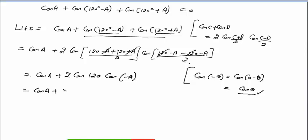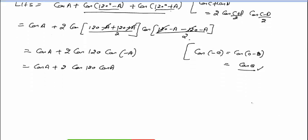तो this will become cos A plus 2 cos 120 times cos A. अब cos 120 की value — cos(90 plus 30) — तो 90 plus theta में cos बन जाएगा sin theta। 90 plus θ second quadrant में है, तो cos to sin convert होता है।